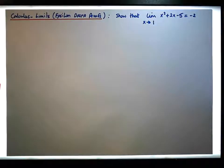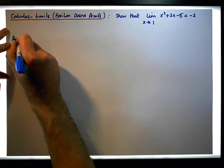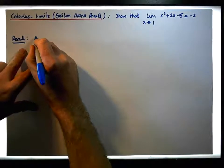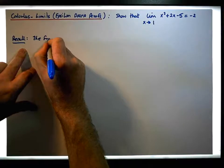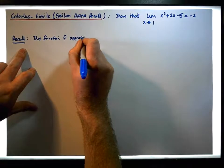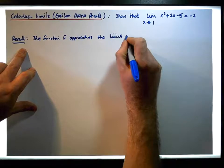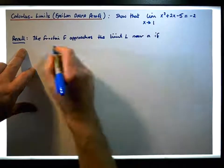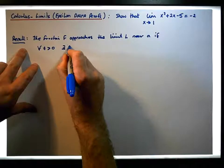Let's first recall the definition of a limit. The definition says something like this: the function f approaches the limit L near a, if for each and every epsilon greater than 0, there exists a delta greater than 0.